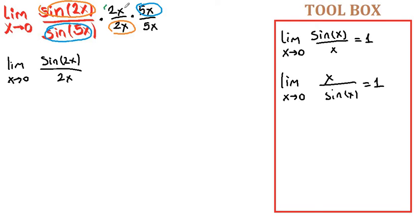Here and the rest we can leave in the fraction form. Now we have 5x over sine of 5x and 2x over 5x.